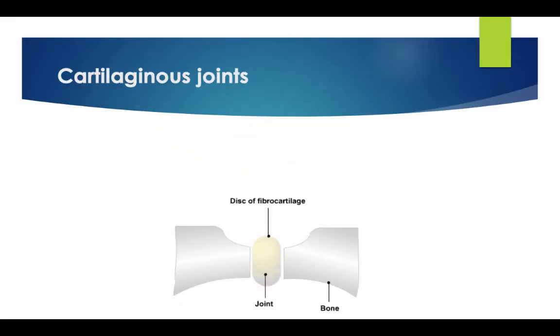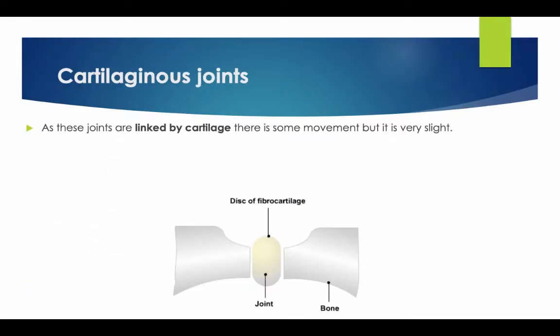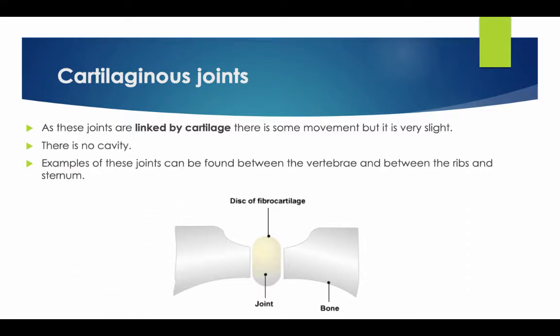The cartilaginous joints: as these joints are linked by cartilage, there is some movement, but it is very slight. There is no cavity. An example of these joints can be found between the vertebrae and between the ribs and the sternum.